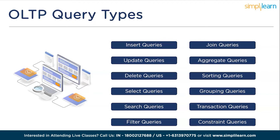Join queries combine data from multiple tables based on specific conditions to create a more comprehensive result. Aggregate queries perform calculations on data, such as computing sums, averages, counts, or other aggregate functions. Sorting queries arrange query results in a specific order — such as ascending or descending — based on a particular column. Grouping queries group data based on specific columns to analyze category information. Transactional queries are related to the initiation, management, and completion of transactions, ensuring ACID properties are maintained. Constraint queries validate and enforce various constraints — such as unique keys and foreign keys — on the data to ensure data integrity.